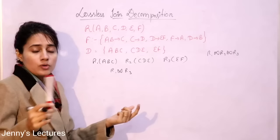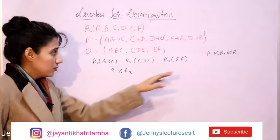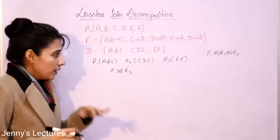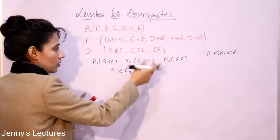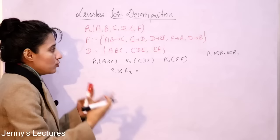R1 has A, B, C and R3 has E, F — no common attribute. In a previous video I mentioned that if there is no common attribute the join would be lossy, but here you cannot directly conclude the decomposition is lossy. We still have two more pairs to check: R1 with R2, or R2 with R3.